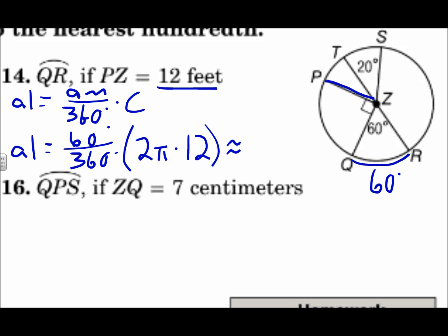Nearest hundredth would be 12.57, and that's feet. Find the arc measure, 60 degrees. Find the circumference, using the radius of 12 feet, and punch it in.